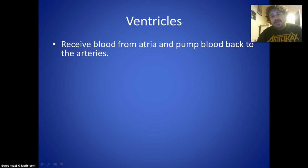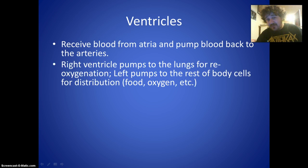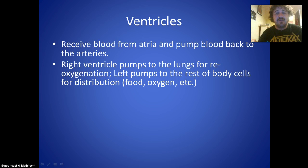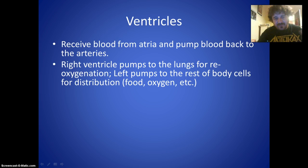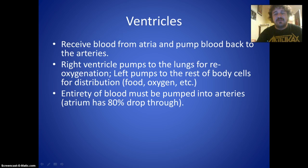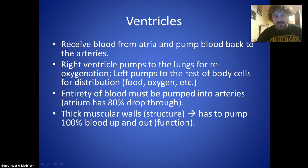The ventricles are the bottom chambers. They receive blood from the atria and pump it out into the arteries. The right ventricle pumps blood to the lungs for reoxygenation — that's where oxygen gets into the red blood cells. The left ventricle pumps blood to the rest of the body — food, oxygen, waste, everything. One only goes to the lungs, the other to the entire body, and think about what that means for the size.